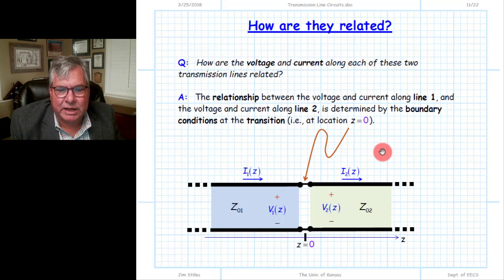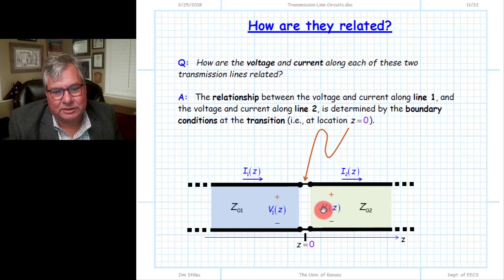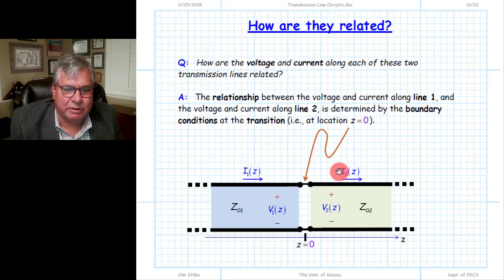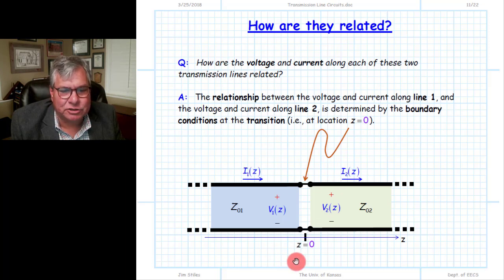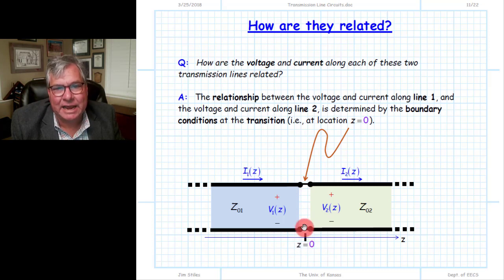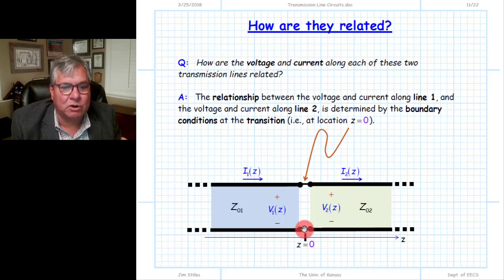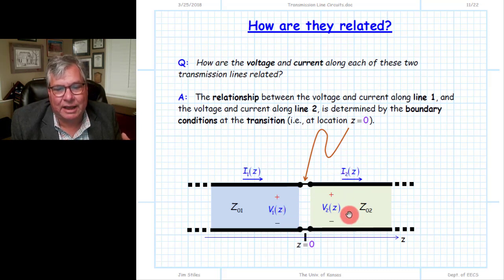Is there any relationship between the current and voltage on the first transmission line and the current and voltage on the second transmission line? Each must individually satisfy the telegrapher equations. The relationship between them is determined by boundary conditions. We apply a boundary condition at the interface between the two transmission lines — we apply KVL and KCL at that location — and we'll find there is a relationship between this current function and this current function, and likewise between this voltage and this voltage.